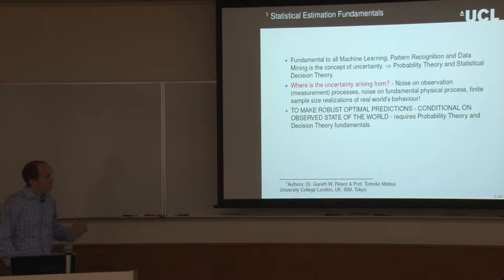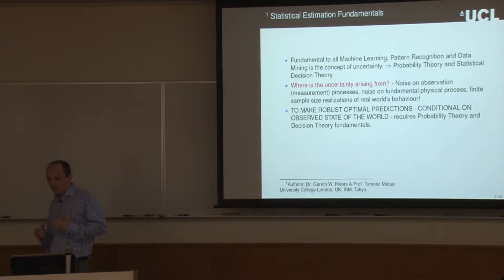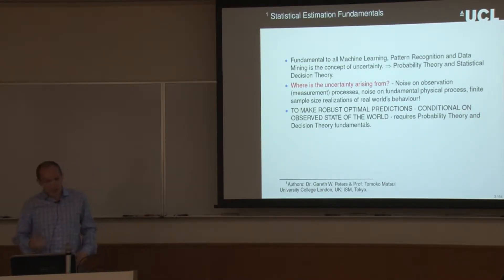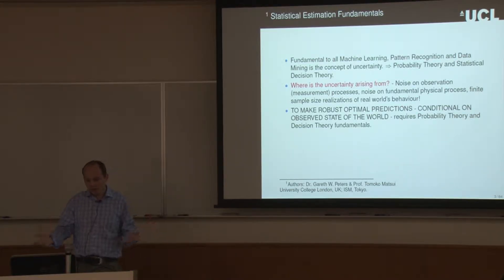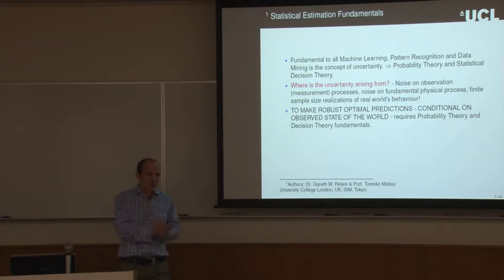Fundamental in all of machine learning, pattern recognition, and data mining is the concept of uncertainty. To deal with this, we apply probability theory and statistical decision theory. Sources of uncertainty include noise on observation processes — your measurements, which in the real world are noisy — noise on fundamental physical processes such as in stochastic models, and also due to finite sample size realizations. You're only ever going to collect a small sample compared to the real world. To make robust, optimal predictions conditional on what we observe in our data, we need to apply probability theory and decision theory fundamentals.